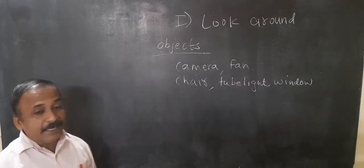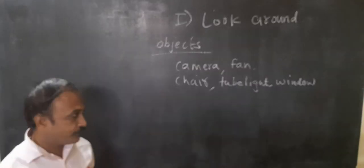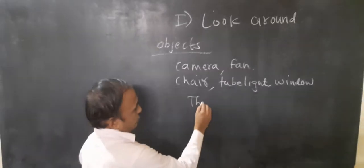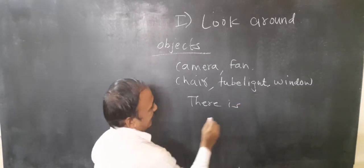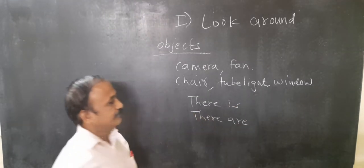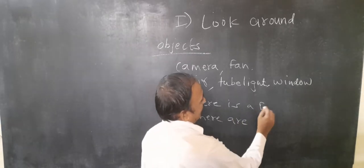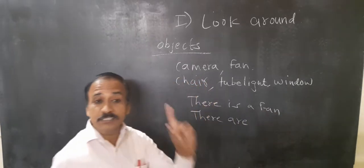After finding this object, you do one thing. You use there is and there are. There is a use for singular. There is a fan. You can say there is a fan.